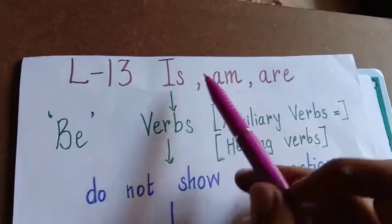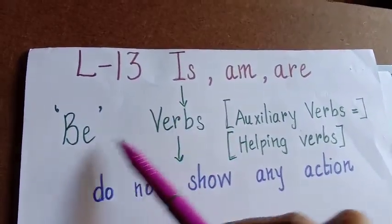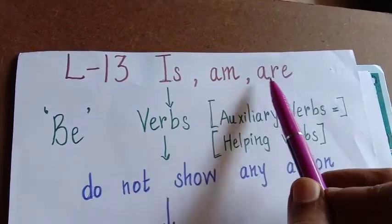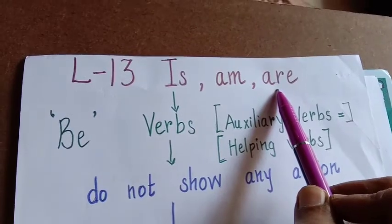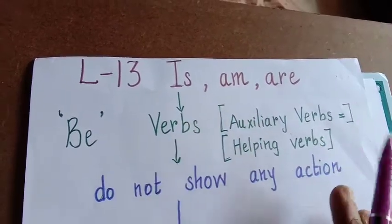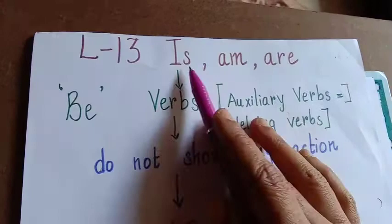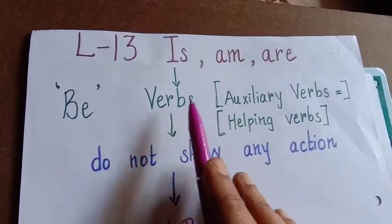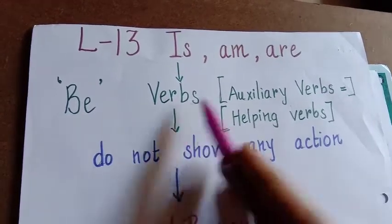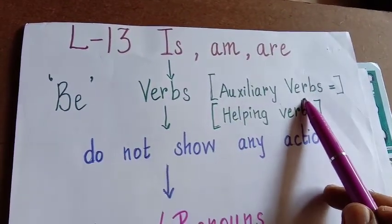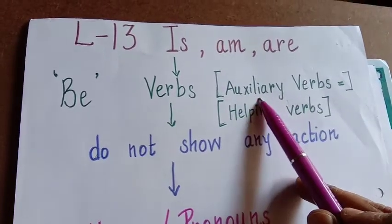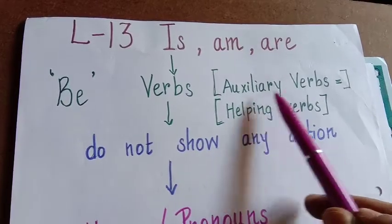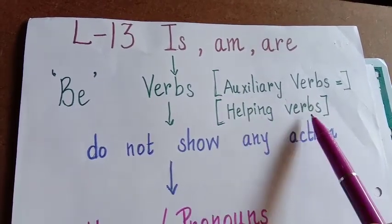Now those verbs are known as B verbs. They are 'is', 'am' and 'are'. That is the topic of today's study — lesson number 13: is, am and are. These words is, am and are are the B verbs. These B verbs are also known as auxiliary verbs. The meaning of the word auxiliary means helping, so auxiliary verbs means helping verbs.